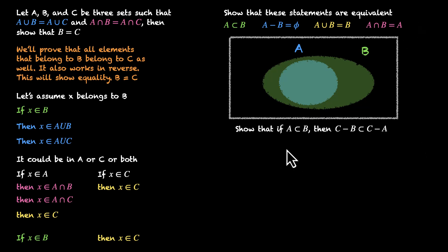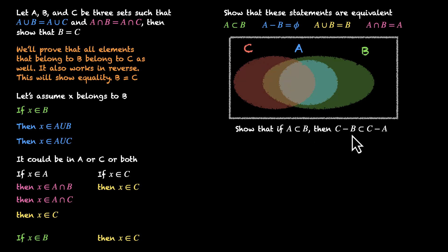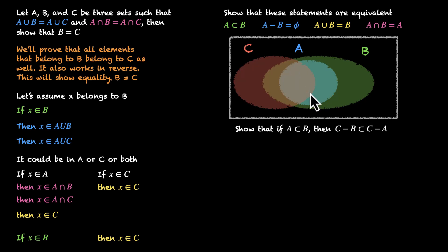Show that if A is a subset of B, then C minus B is a subset of C minus A. We introduce a third set C. C minus B subtracts all elements in B from C, leaving an orange area not in A or B. For C minus A, we subtract only the smaller part A, giving a bigger remaining area. From the image, C minus A does contain C minus B, so the statement is true.